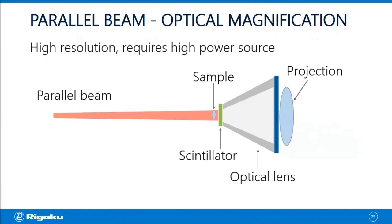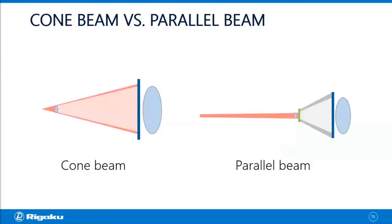But why is the parallel beam better for high resolution? So let's compare the two. When you do an x-ray CT scan, in general, you're using a very small x-ray source. And that source can drift or vibrate when you're doing a scan.